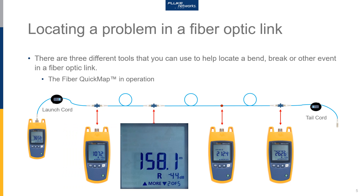The next event is occurring at 158 meters. The reflectance is minus 44 dB, which indicates this is most likely a connector — it's the second event of five. For reflectance, I set my instrument at minus 45 dB plus or minus 1 dB, so this minus 44 dB reading is perfectly okay.